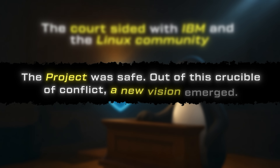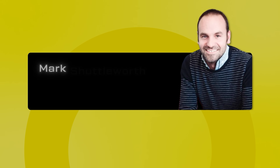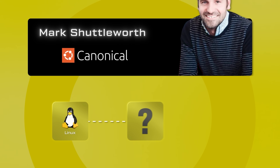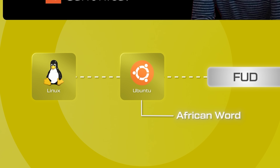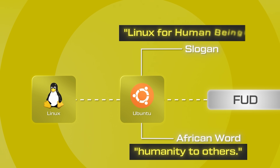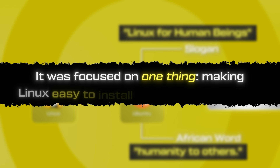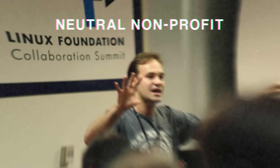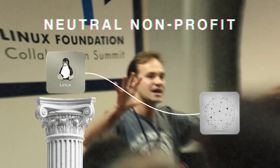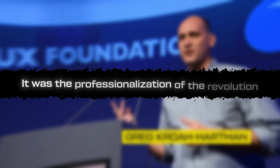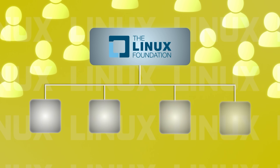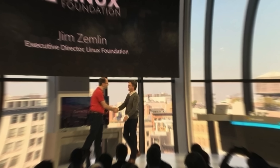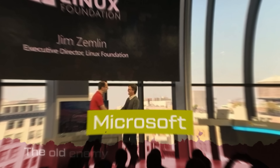Out of this crucible of conflict, a new vision emerged. In 2004, a South African tech entrepreneur named Mark Shuttleworth founded Canonical. His goal was to create a version of Linux that directly answered the FUD. He called it Ubuntu, an African word meaning "humanity to others." Its slogan was "Linux for human beings," and it was focused on one thing: making Linux easy to install and use for everyone. Having survived corporate attacks and legal battles, the Linux project needed to mature. In 2007, the Linux Foundation was formed — a neutral non-profit that took on the role of stewarding the project, hosting its infrastructure, and employing Linus Torvalds and other key developers like Greg Kroah-Hartman, who maintains the stable kernel today. The Foundation's members include the biggest names in technology: Google, Oracle, Intel, Amazon — and in a final stunning irony, one of its top contributors today is Microsoft. The old enemy had joined the revolution.